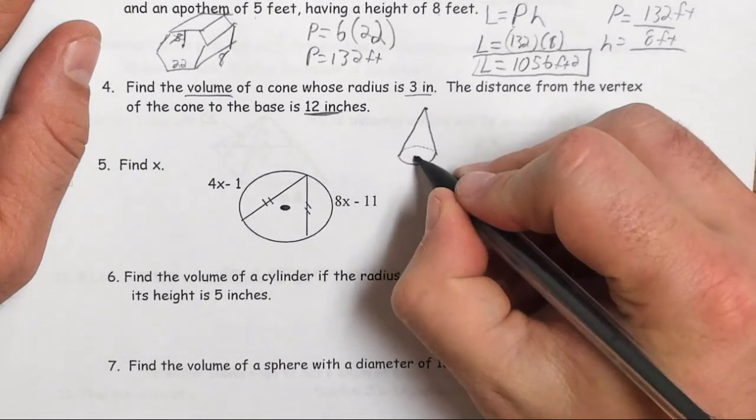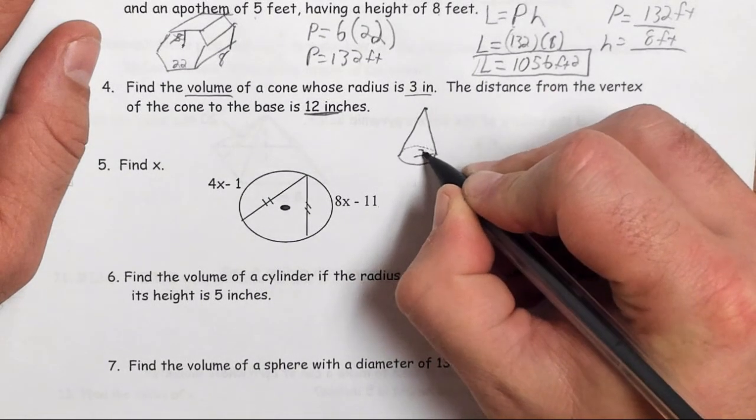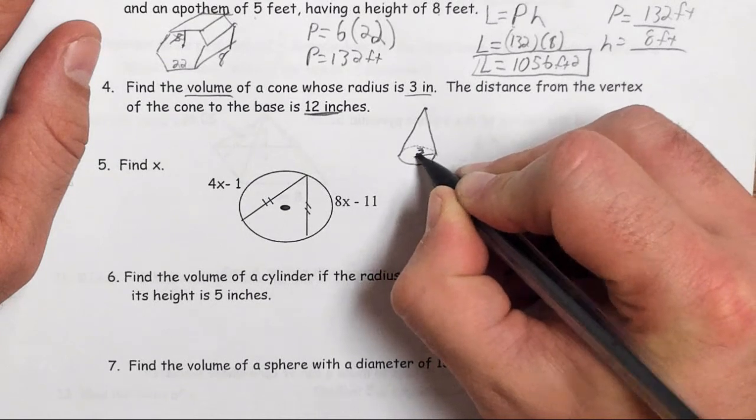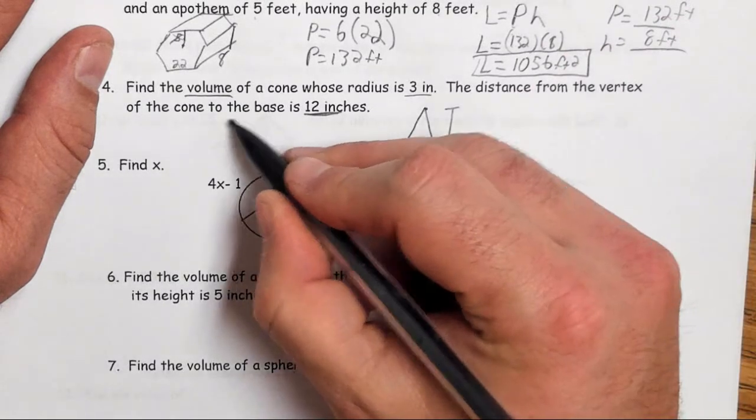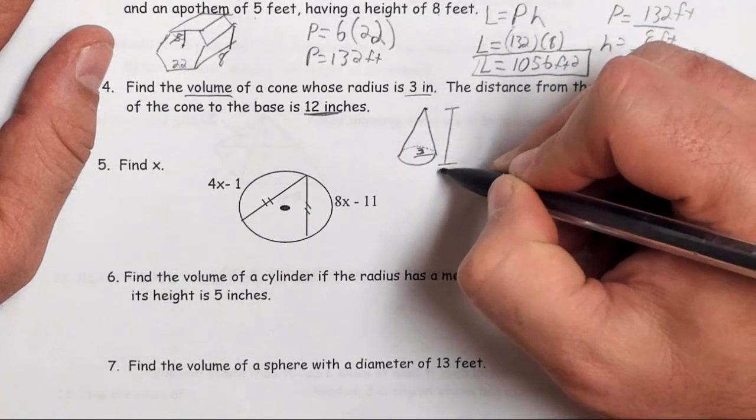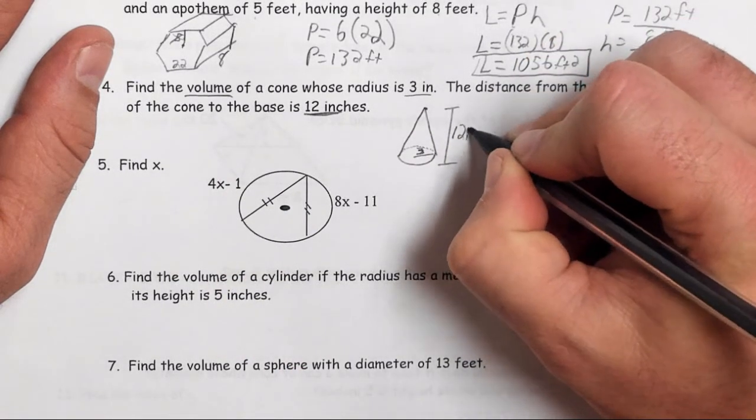We know that my radius is 3 inches, and my distance from the vertex to the cone, we always measure perpendicular distance, is going to be 12 inches.